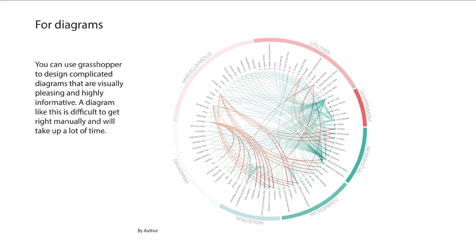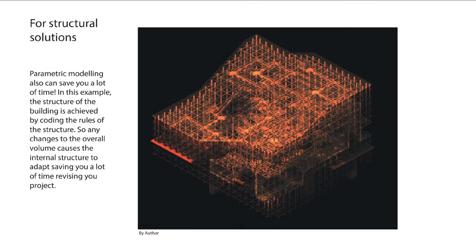What can you use Grasshopper for? Grasshopper can be used for many things. You can use it to create complicated diagrams — if you have complex data you want to visualize, rather than spending a lot of time in Illustrator, you can script a system in Grasshopper and output diagrams. Mainly it's for geometry: structural solutions, optimization, environmental analysis, computation, and also geographic information systems if you have geolocated data you want to visualize or analyze.